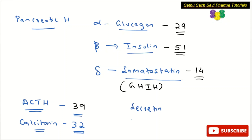You also need to remember a couple of GI peptides: secretin and gastrin. These are gastrointestinal peptides. Secretin is made up of 27 amino acids, whereas gastrin is made up of 17 amino acids. So ACTH, calcitonin, secretin, gastrin, and the pancreatic hormones are all peptides.